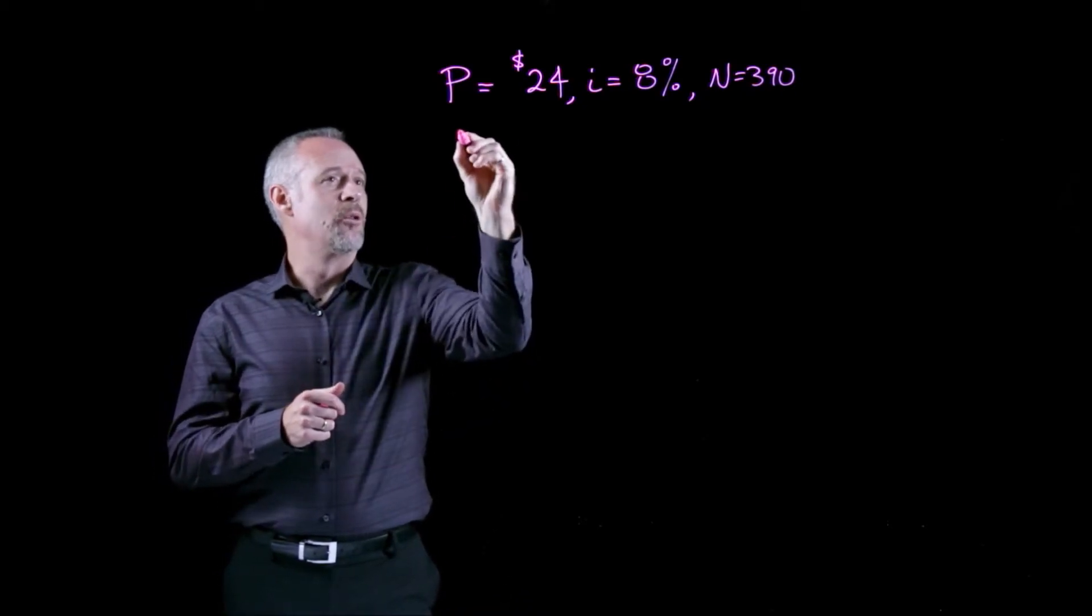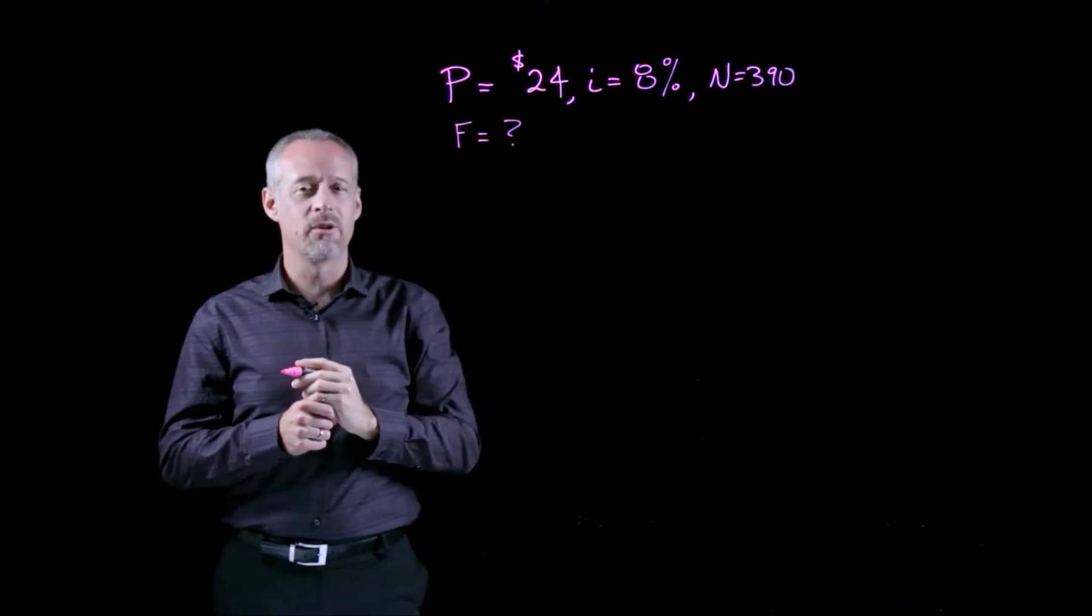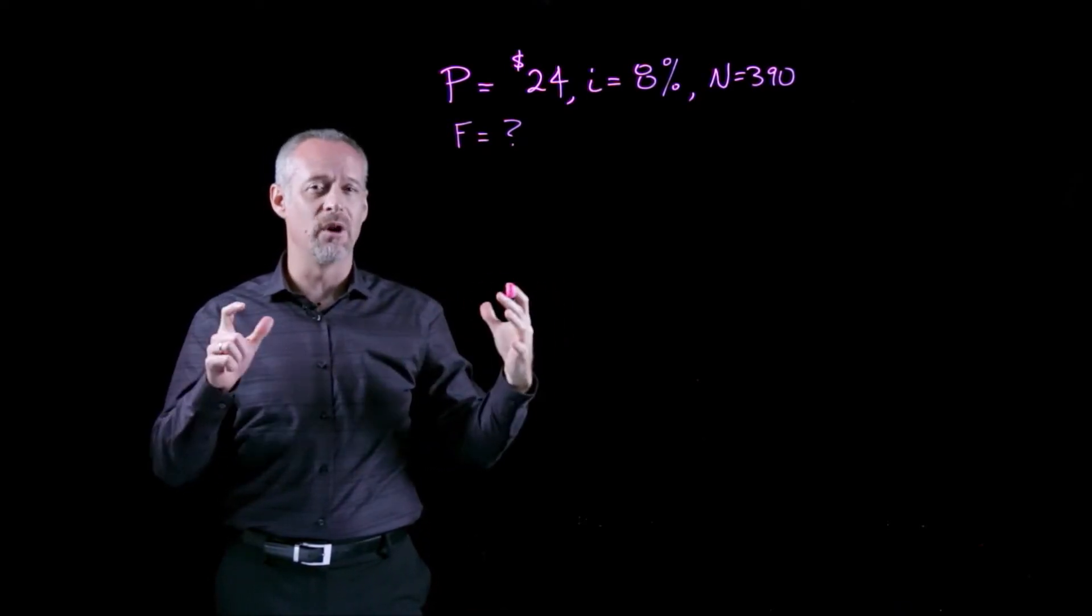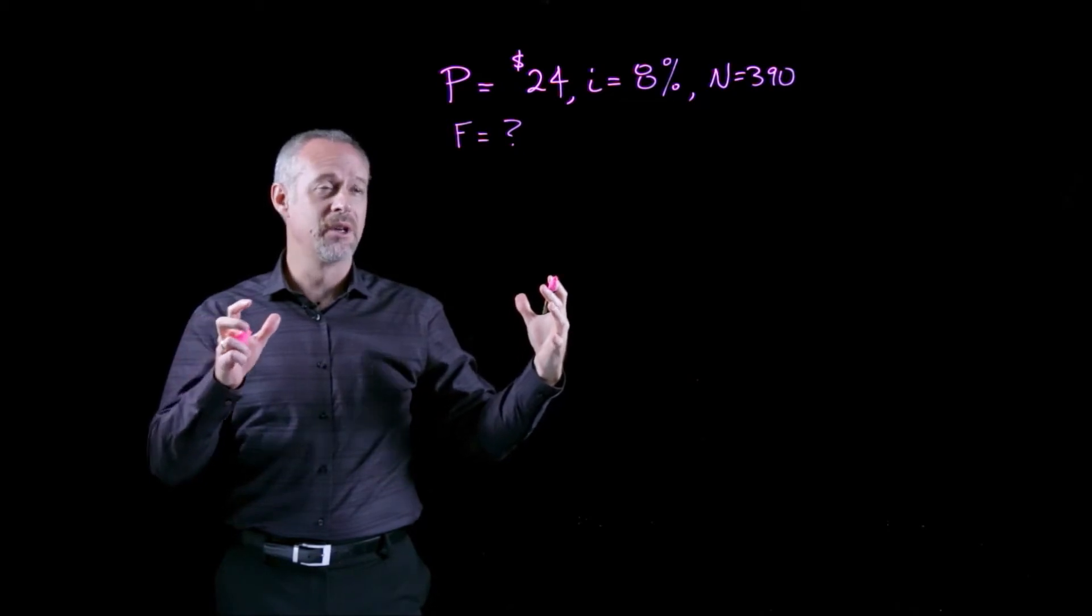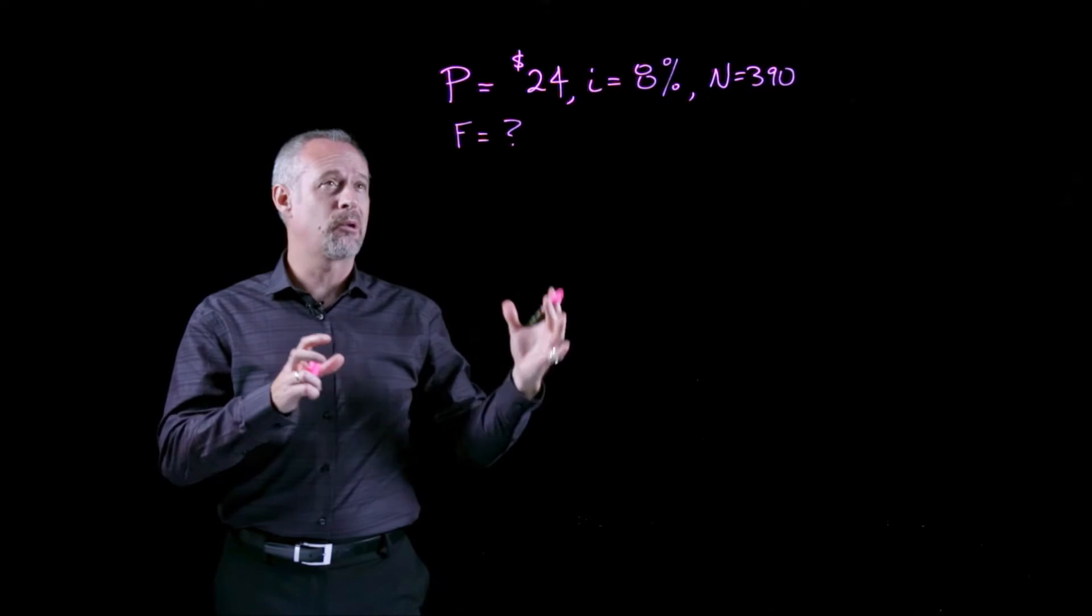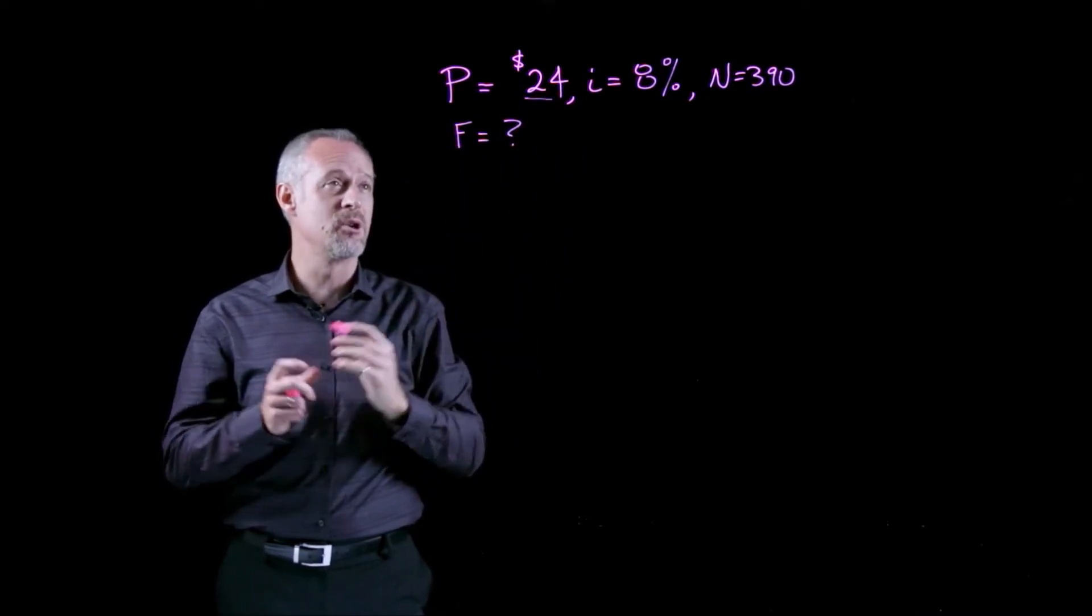So, really what we'd like to know is the future value. Now we're not going actually into the future, we're just saying that the future in the time value of money problem is 2016, the present, the time of the investment was 1626, the year 1626.